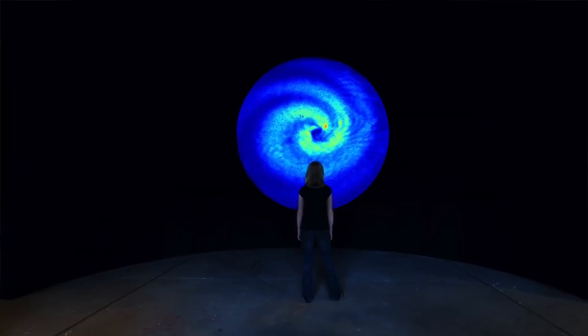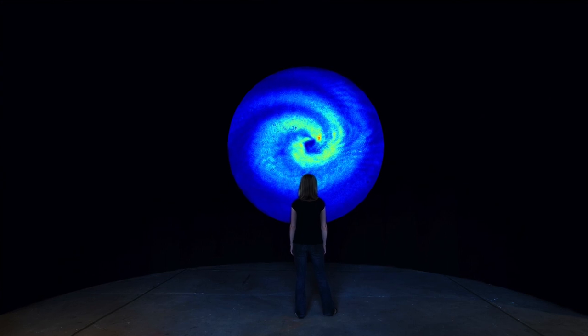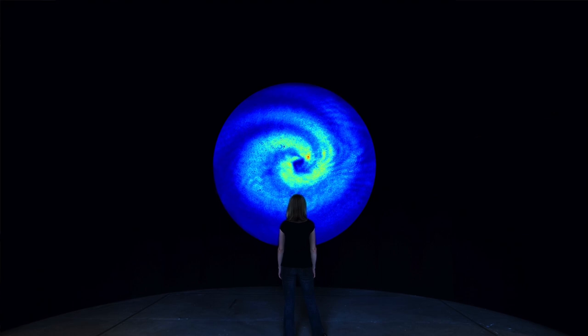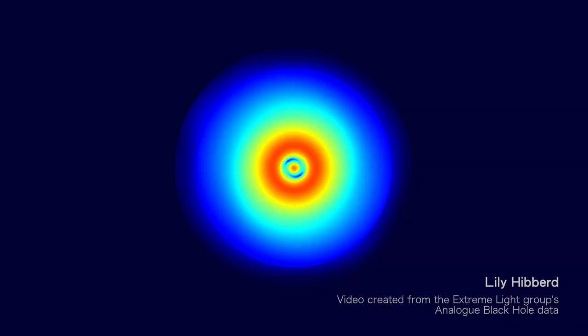So analog black holes—in general, the idea behind what is called analog gravity is the attempt to try and recreate in the lab the same kind of conditions that you would have around a real gravitational black hole, such as the one that lies at the center of our own galaxy. Black holes are at the center of some of the most interesting and important open questions in physics at the moment, and so you can try to answer some of those questions by recreating some of the conditions that you can find around a black hole in the lab.